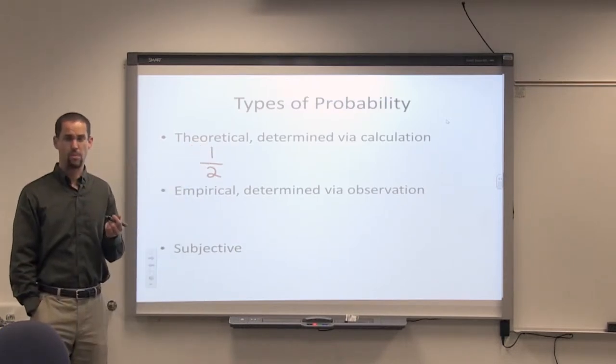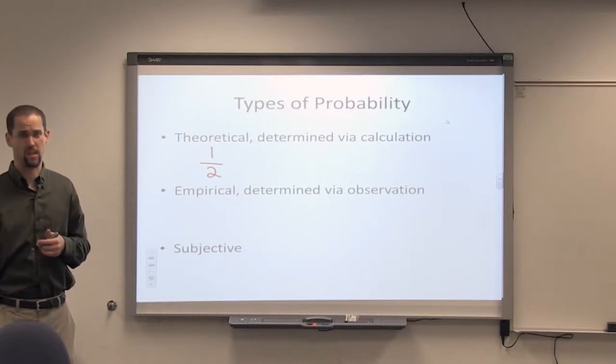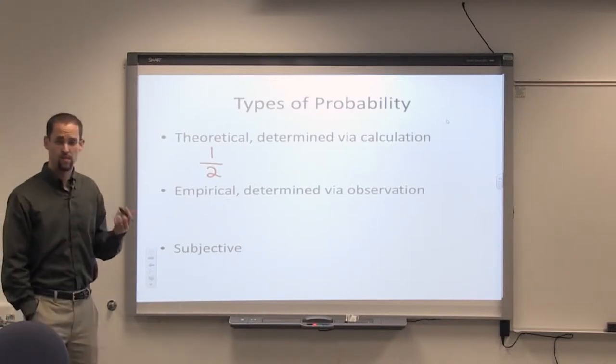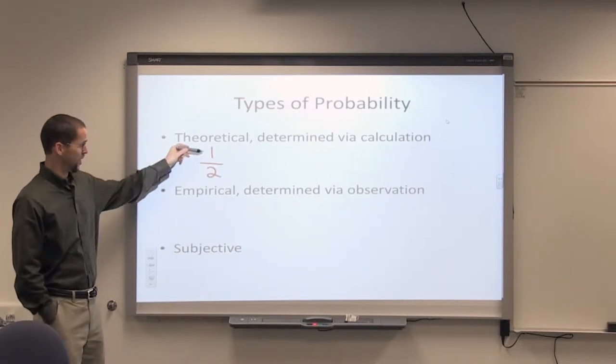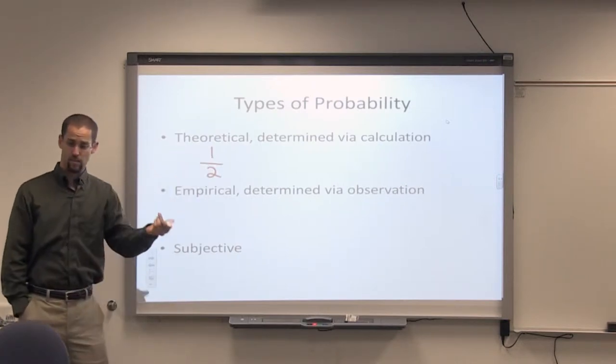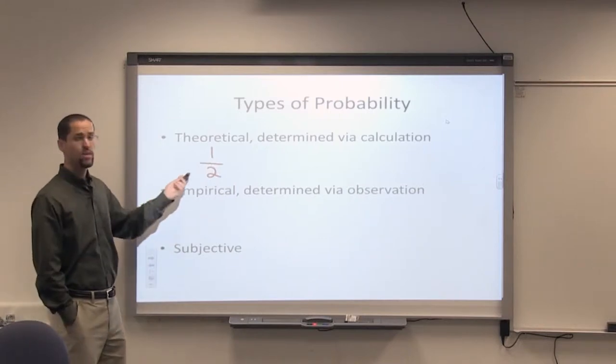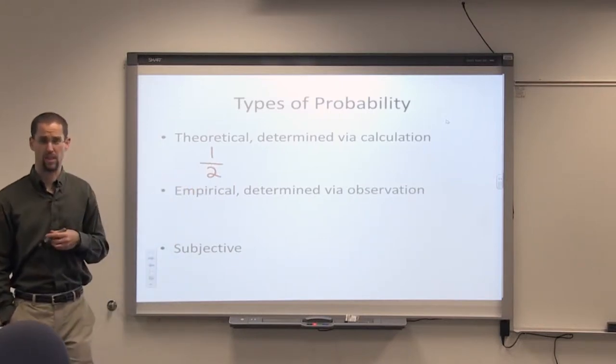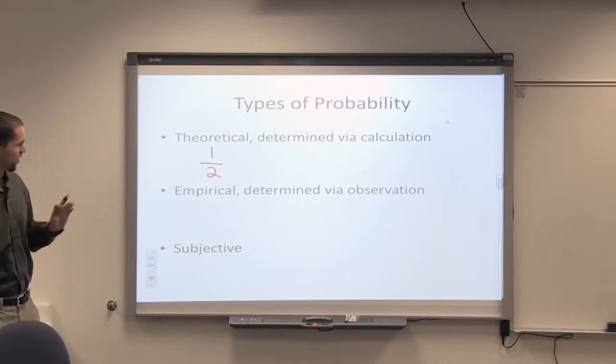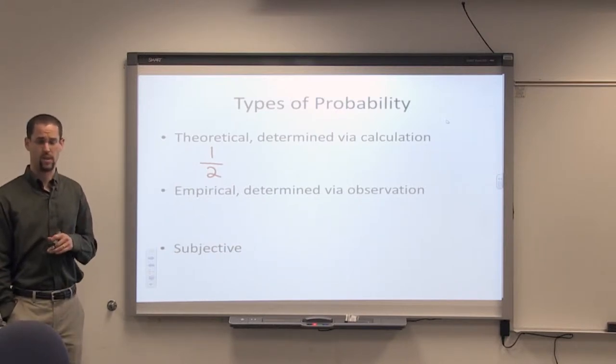So you have a theoretical probability. You've calculated a probability based on the flip of a coin. That could be the probability that there's one way to come up heads or one way to come up tails out of the two possibilities, heads or tails. So that's a very simple theoretical calculation of probability.